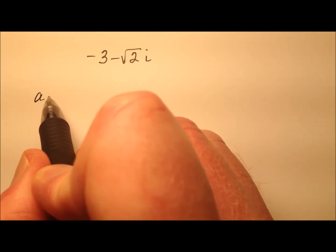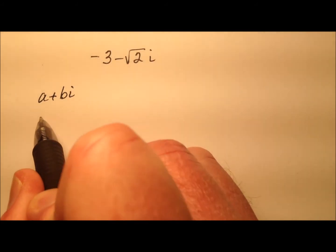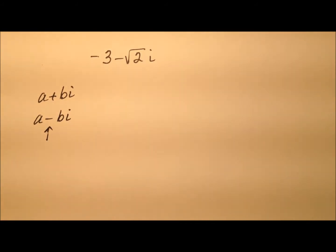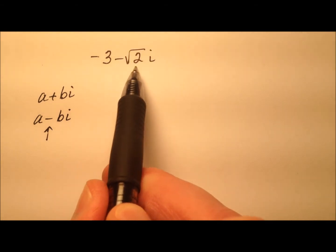Remember, for any complex number written in a plus bi form, which is standard form, its complex conjugate will be a minus bi. We're just going to change that sign right in the middle, or you can say we're going to change the sign of the imaginary term.